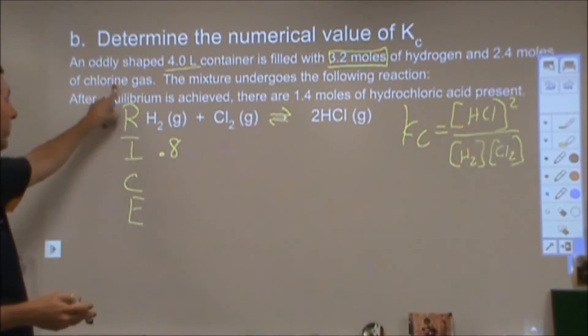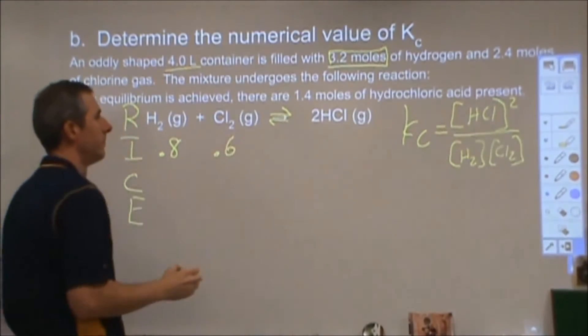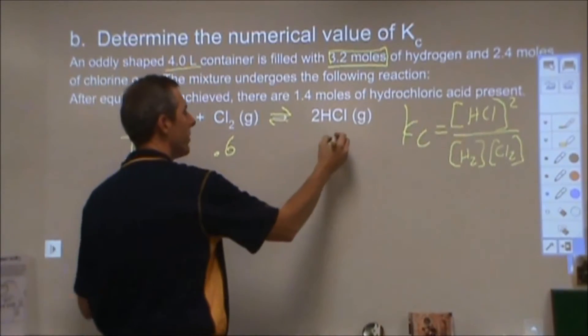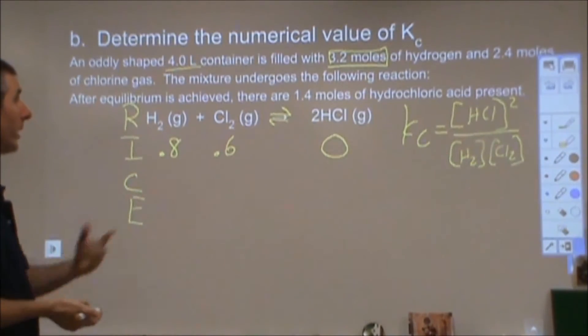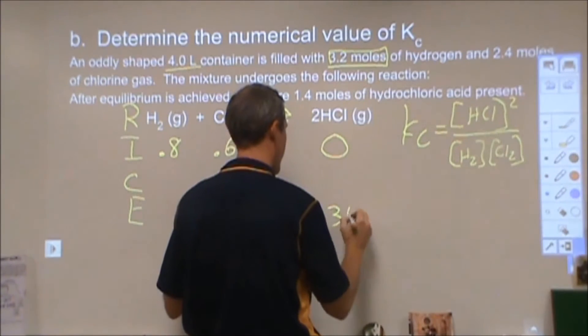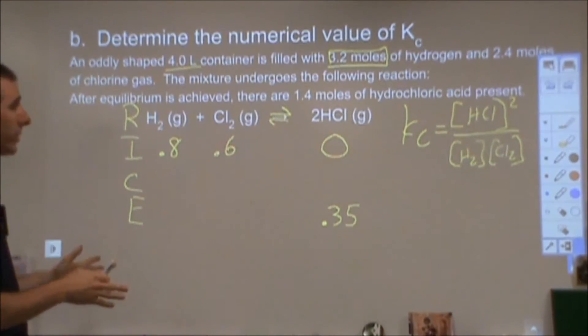2.4 moles of chlorine gas. 2.4 divided by 4 is 0.6. And that just tells me how much hydrochloric acid I have at the end. Usually then we can assume that there is 0 to begin. And it does tell me I have 1.4 moles present at the end. 1.4 divided by 4 is 0.35. So this is what the problem tells me.